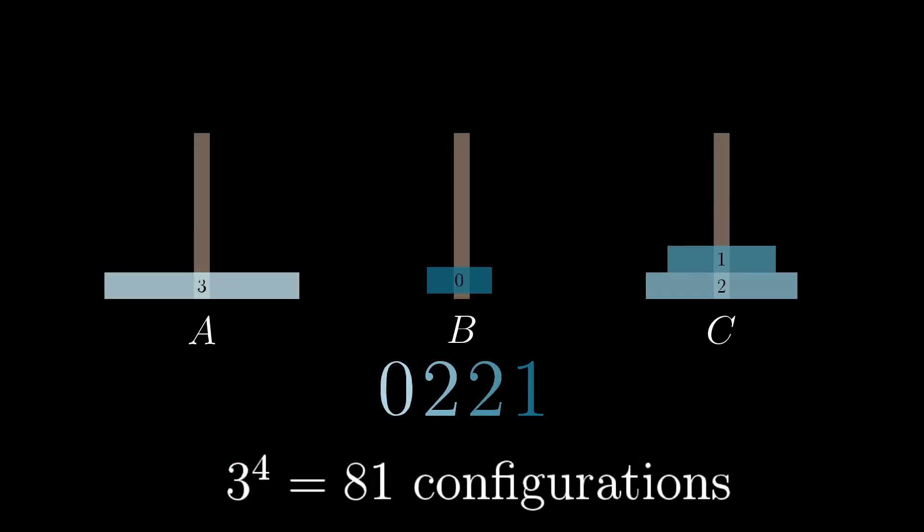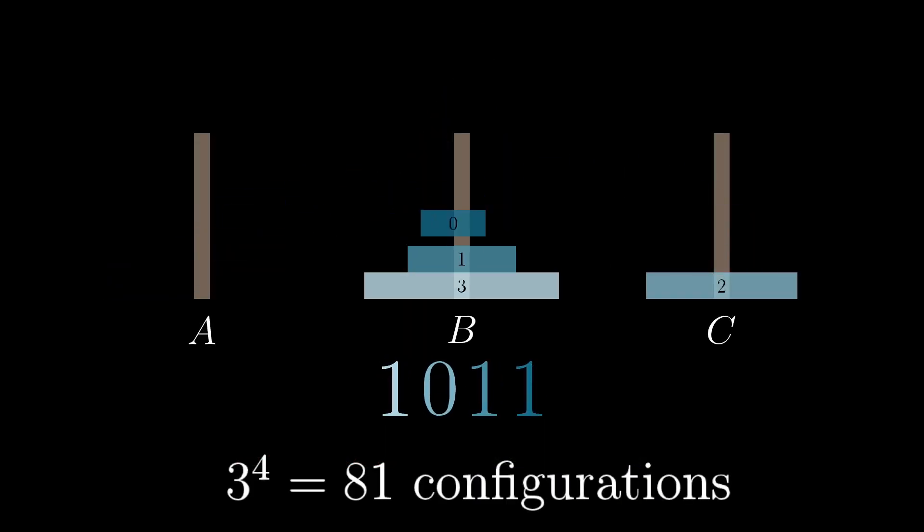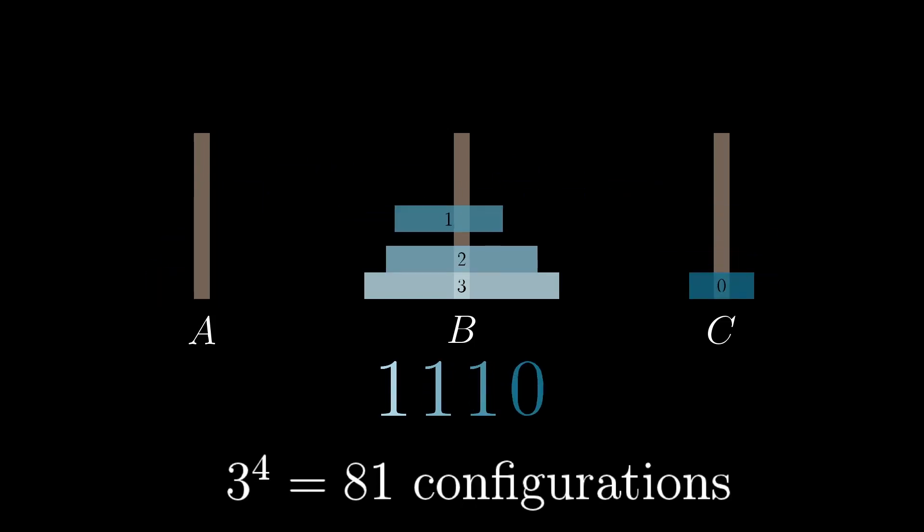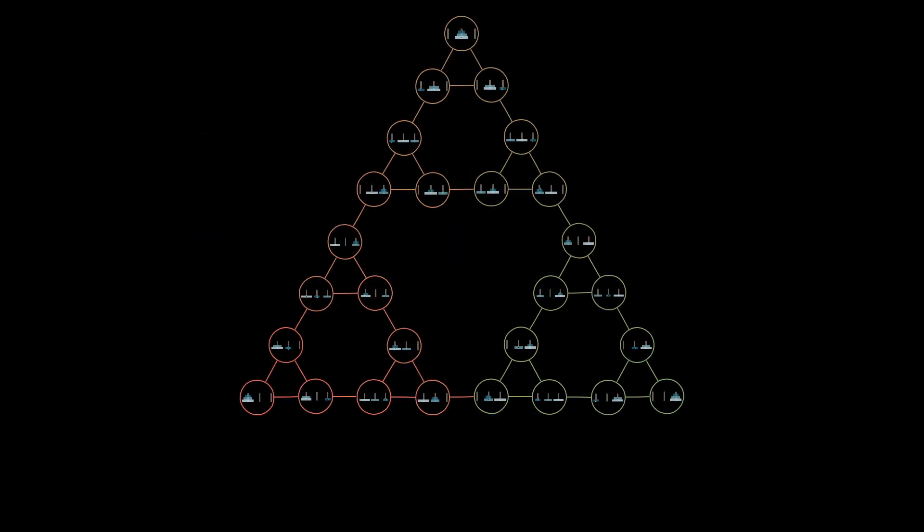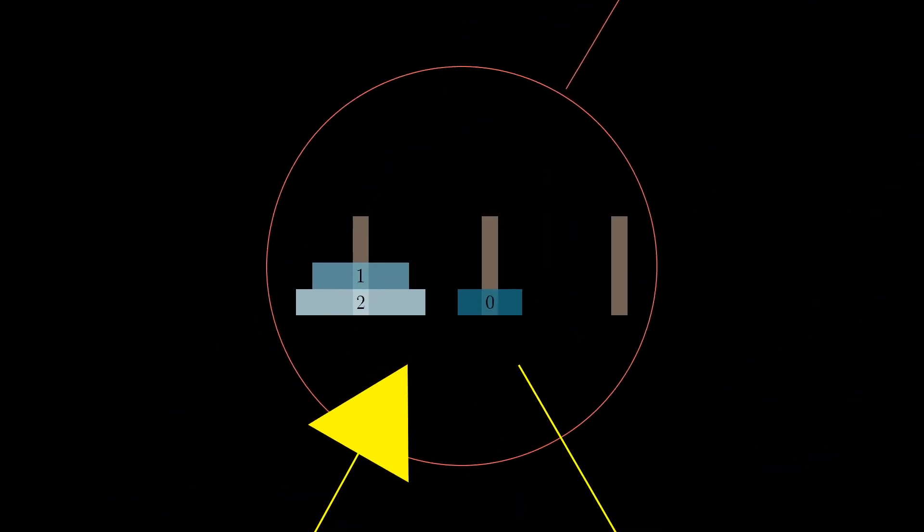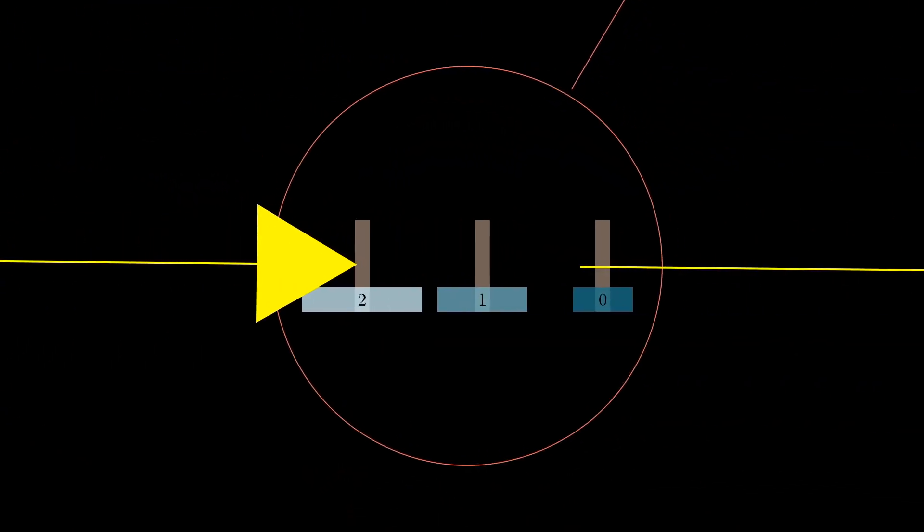So now, let's think about what it means for this method of solving the constraint problem by counting in ternary to walk through all possible configurations. What it's going to give us is a way to wander through this graph and hit each node once and only once. This is crazy to me. If you just look at the Sierpinski graph structure, it's not clear at first that such a path is even possible. And yet, we found one just by counting. If that's not beautiful, I don't know what is.